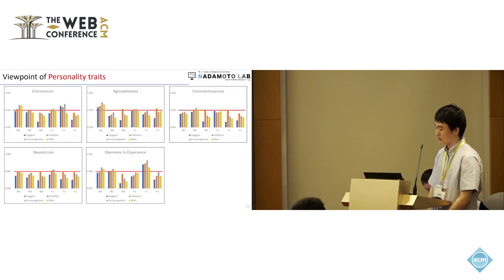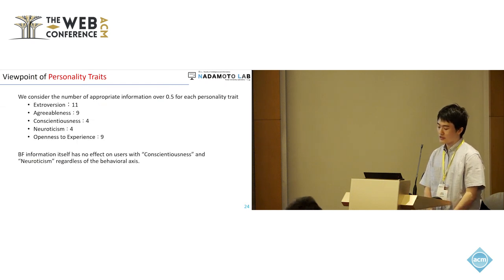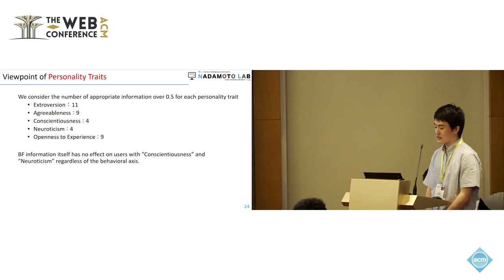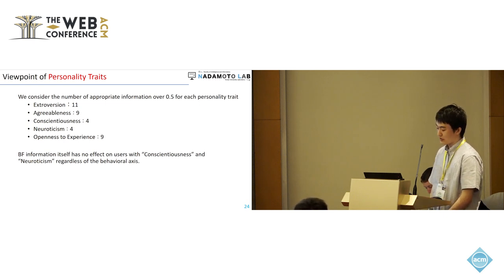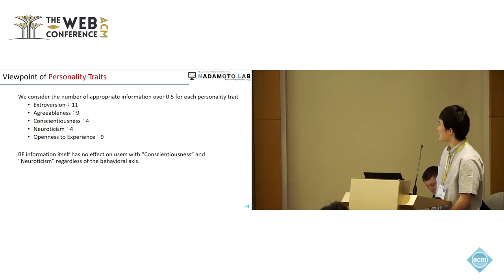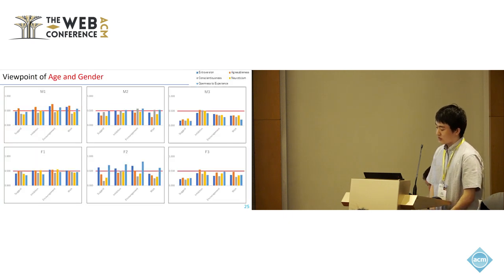Next, we discuss from the viewpoint of personality trait. This is the result from the viewpoint of personality trait. We count the number of appropriate information items over 0.5 for each personality trait. From this result, there is evidence that BF information itself has no effect on users with conscientiousness and neuroticism, regardless of the BF behavior axis.